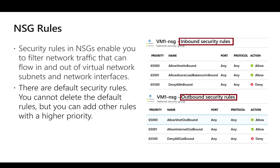The lesser the priority number, the higher precedence the rule will have. For example, the default inbound rules include VNet inbound allow, load balancer traffic allow, and deny all inbound. If we specify one more rule with priority 100 — with the same rule allowing inbound on any port and any protocol but with the action set to deny — that will take precedence because it has a lower priority number.